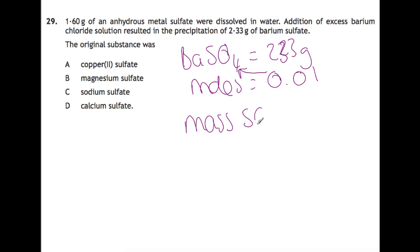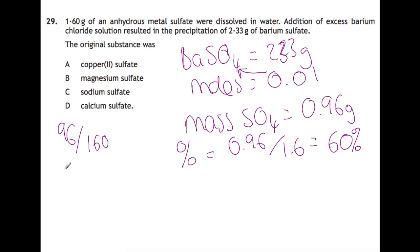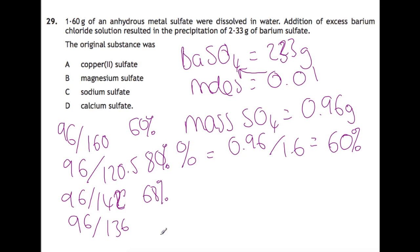So if we work out what mass of sulfate ions we have, we have 0.96 grams of sulfate. And we're going to do this as a percentage of the original. So the percentage is 0.96 divided by 1.6 to give us 60%. And now you just need to work out the percentage of sulfate in each of these. So for the copper it's going to be 96 divided by about 160. For the magnesium it's 96 divided by 120.5. And then we've got 96 divided by 142 for the sodium and 96 divided by 136 for the calcium. So you find it's 60% for the copper, it's 80% for the magnesium, 68% for the sodium, and 71% for the calcium. So copper sulfate is your answer there.